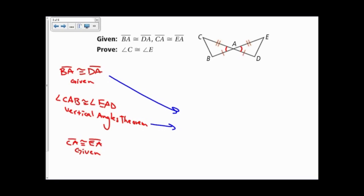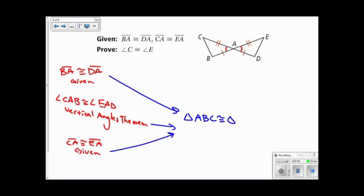These ideas tell us that triangle ABC is congruent to triangle — let's see — A corresponds with A, B corresponds with D, and C corresponds with E. These triangles are congruent by the side-angle-side postulate.